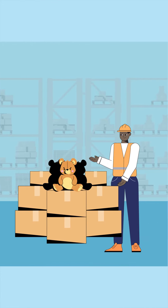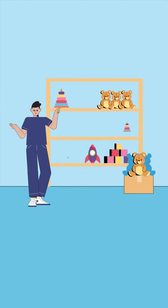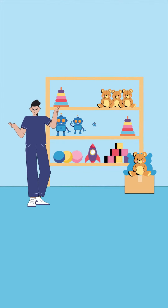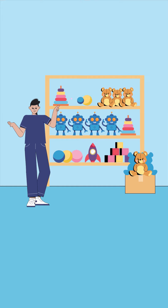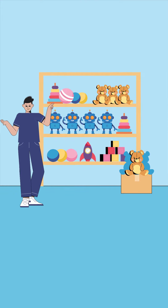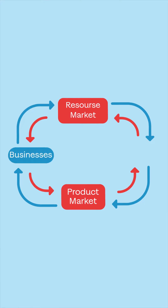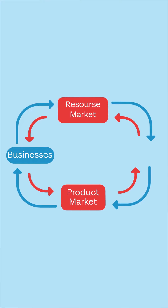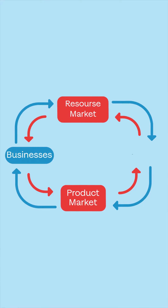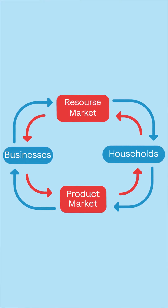The other side of the model is the product market. Businesses offer products and services to the product market, and households buy them using their income. So once again, resources flow counterclockwise, from businesses to households this time, and money flows clockwise, from households to businesses.